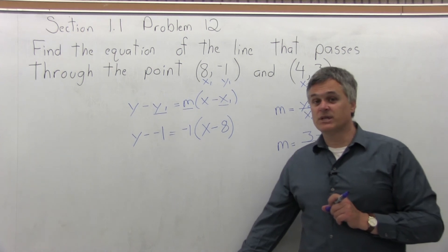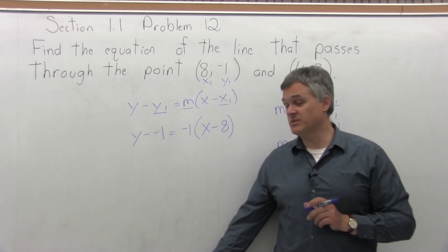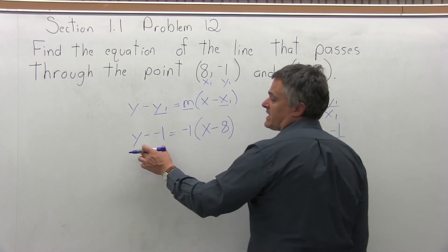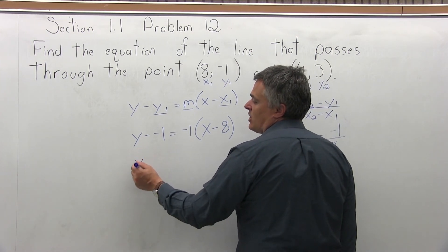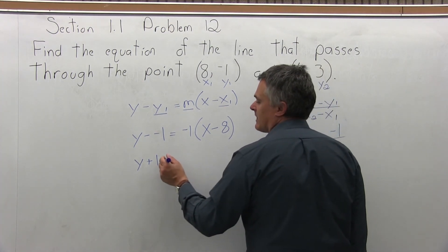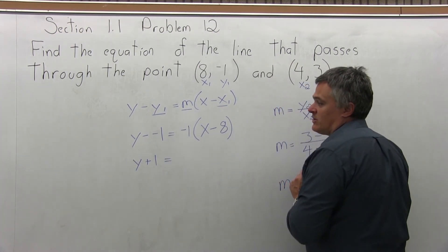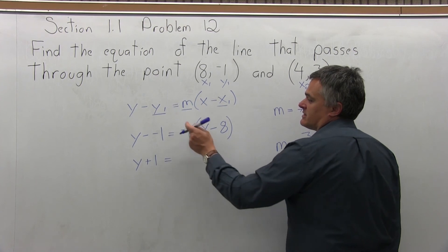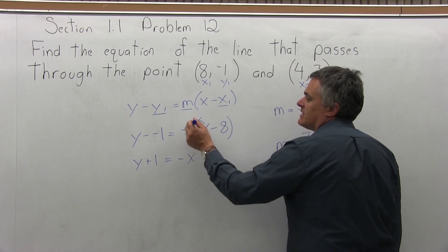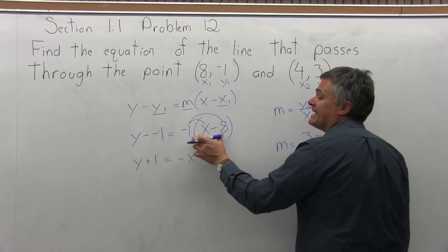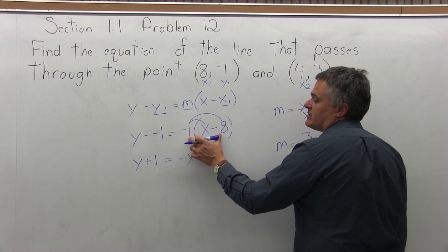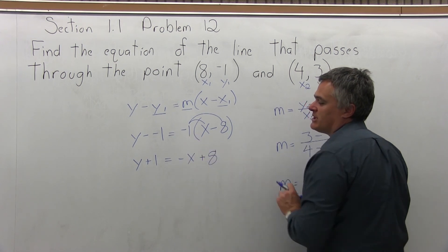Most teachers like to see it in the y equals mx plus b form, which essentially means solve this for y. So to do that, on the left side, I'm going to make this y minus negative 1 into y plus 1. On the right side, I'm going to start by clearing my parentheses. Negative 1 times x is negative x. Negative 1 times negative 8 is positive 8. Remember your rules for sign numbers. A negative times a negative is positive.